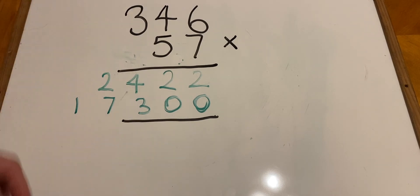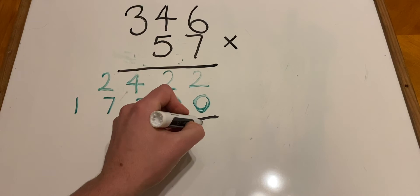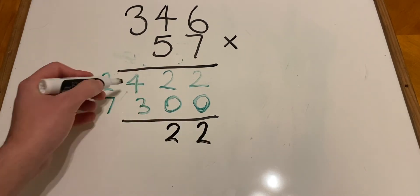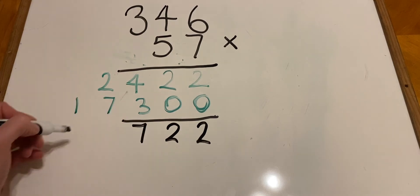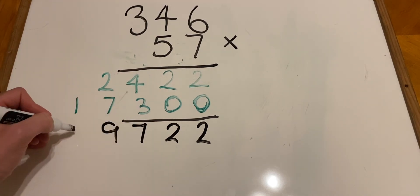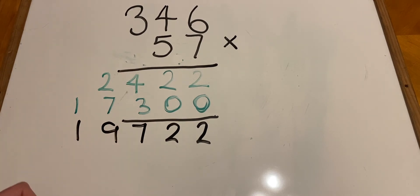Now we have the two answers to the calculations we've worked out. The last thing we need to do is add them together. So 2 plus 0 is 2. 2 plus 0 again is 2. 4 plus 3 is 7. 7 plus 2 is 9. And 1 on its own makes our answer. Count 3 in to add the comma: 19,722.